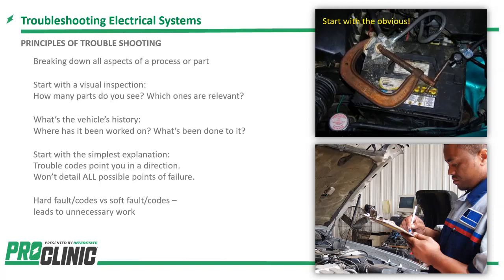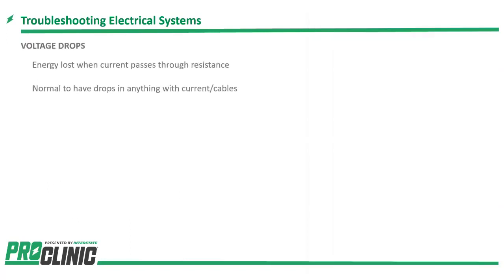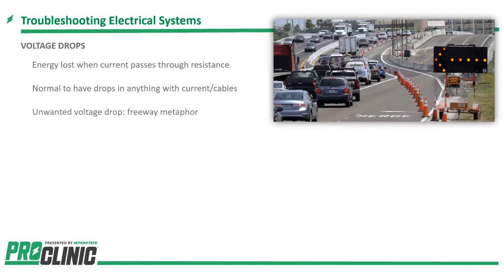If you think the problem may be electrical, you want to look for voltage drops. When we talk about voltage drops, we're talking about the energy that's lost in a circuit or component when current passes through a resistance factor. There will always be some type of voltage drop wherever we have current, voltage, and resistance. Today we're going to talk about unwanted voltage drops. Let me give you an example of what I'm talking about.